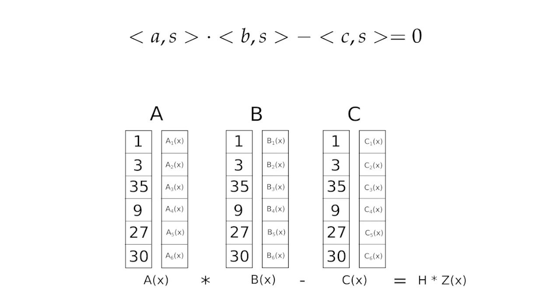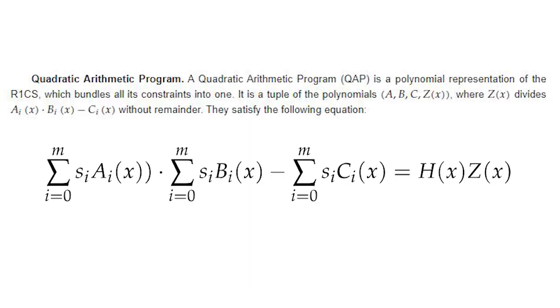A quadratic arithmetic program (QAP) is then used to turn the R1CS vectors into a polynomial representation. As a QAP allows us to simultaneously check all of the constraints at once, a QAP satisfies the following equation.